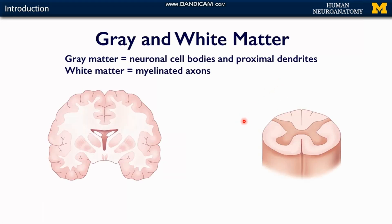There is the concept of gray matter and white matter. Gray matter is a collection of cell bodies of neurons and proximal dendrites — wherever we use the term gray matter, we mean cell bodies of neurons. White matter is a collection of axons, specifically myelinated axons. Since myelin is a lipid and lipid is white in color, we call it white matter. In the brain, gray matter is placed in the periphery and white matter is placed centrally.